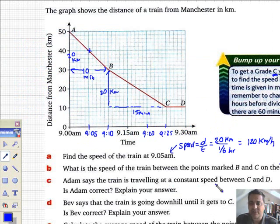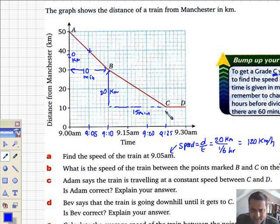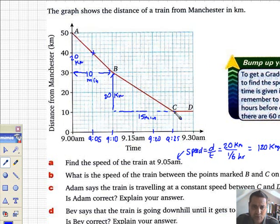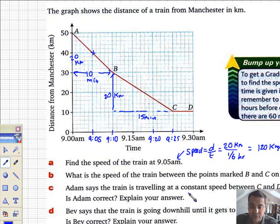Adam says that the train is traveling at constant speed between C and D. Is Adam correct? At C, I'm 10 kilometers away from Manchester, and the time is 9.25. At D, I'm still 10 kilometers away from Manchester, and the time is 9.30. What's happened? Five minutes has gone on, and I'm no nearer to Manchester. The train is stationary.